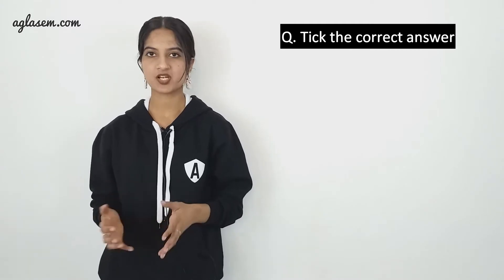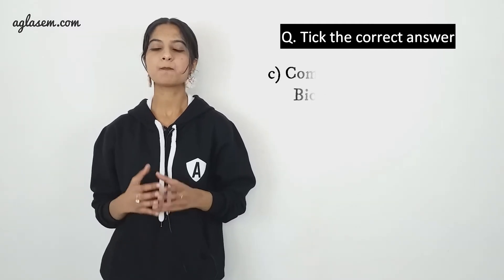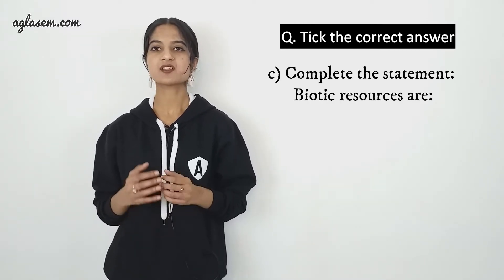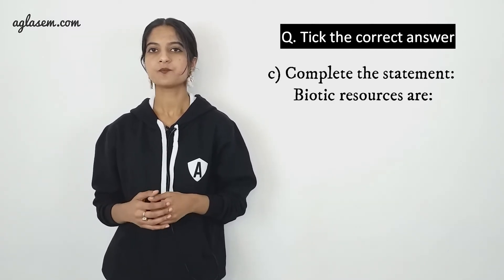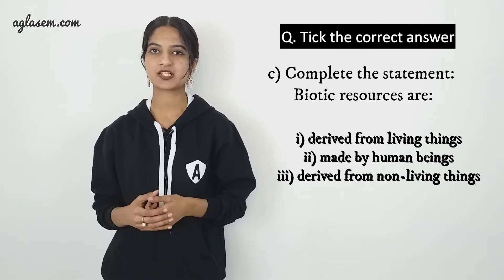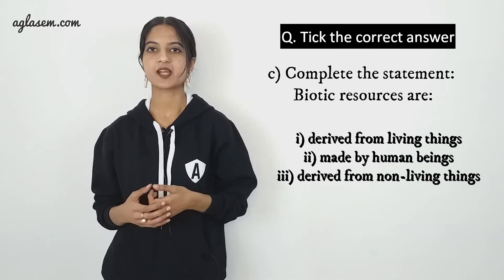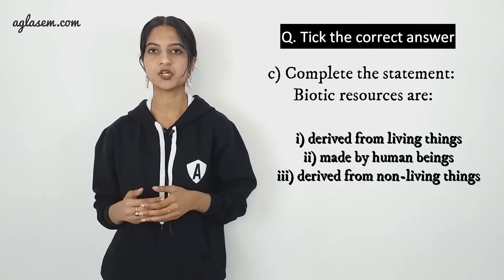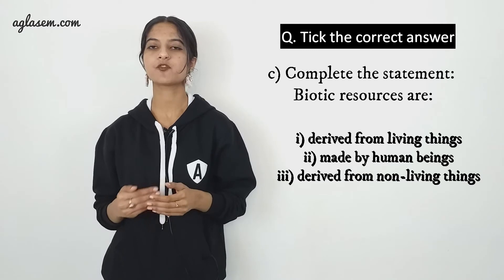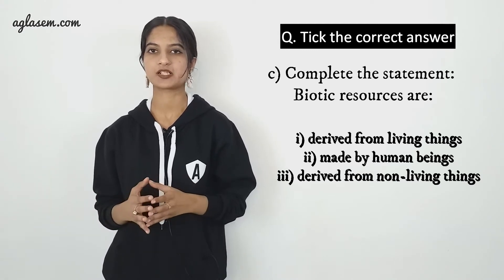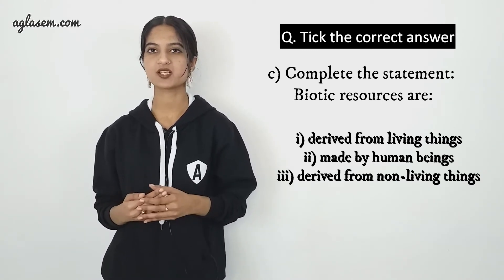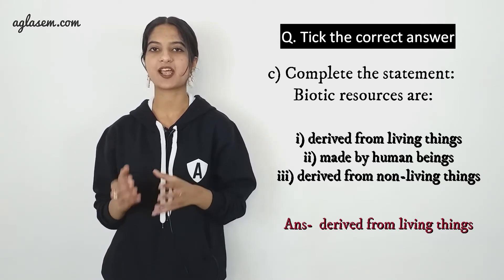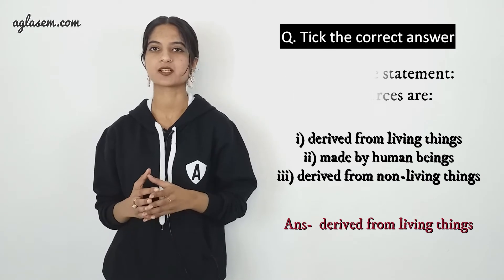Complete the statement: Biotic resources are — first, derived from living things; second, made by human beings; or third, derived from non-living things. The answer is biotic resources are derived from living things.